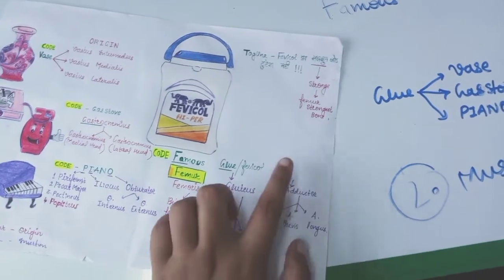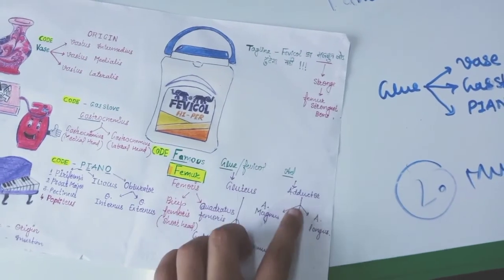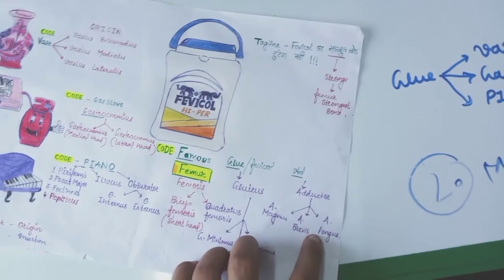Then from add what you'll remember: famous glue's add means adductor - adductor magnus, adductor brevis, and adductor longus.